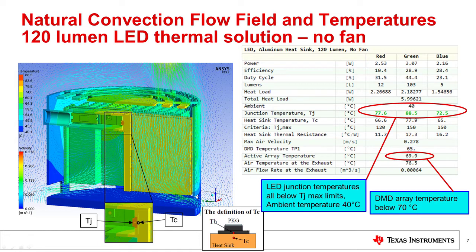On the right side, more numerical details are given. Total heat load is 6 watts at assumed ambient temperature of 40 degrees Celsius. Most notably, all LED junction temperatures are well below the limits allowed by manufacturers' data sheets and active array temperature also is maintained below maximum allowed value of 70 degrees Celsius.